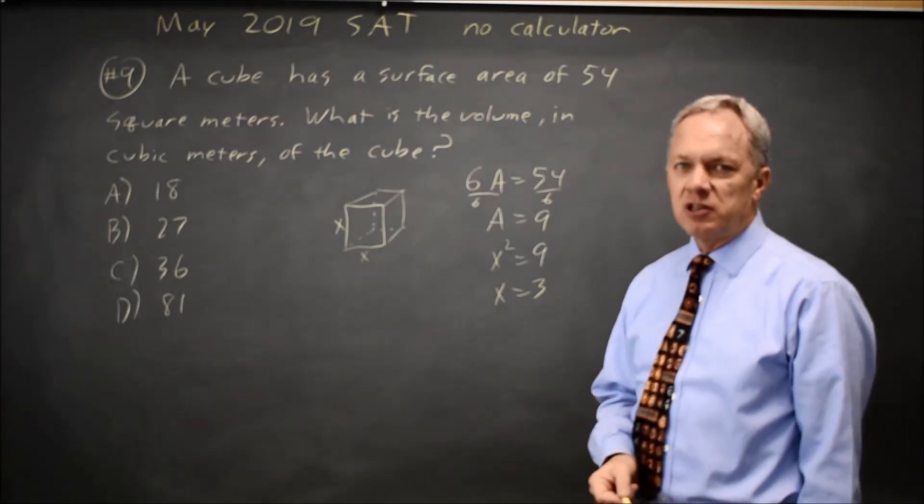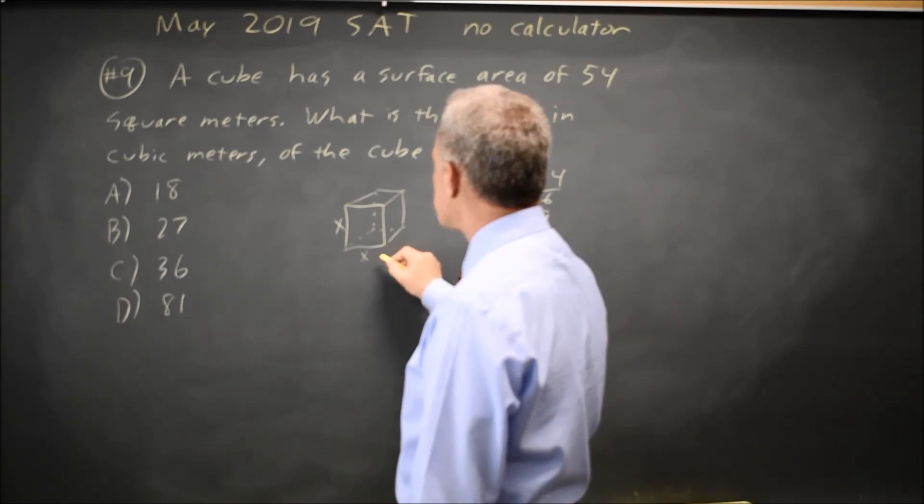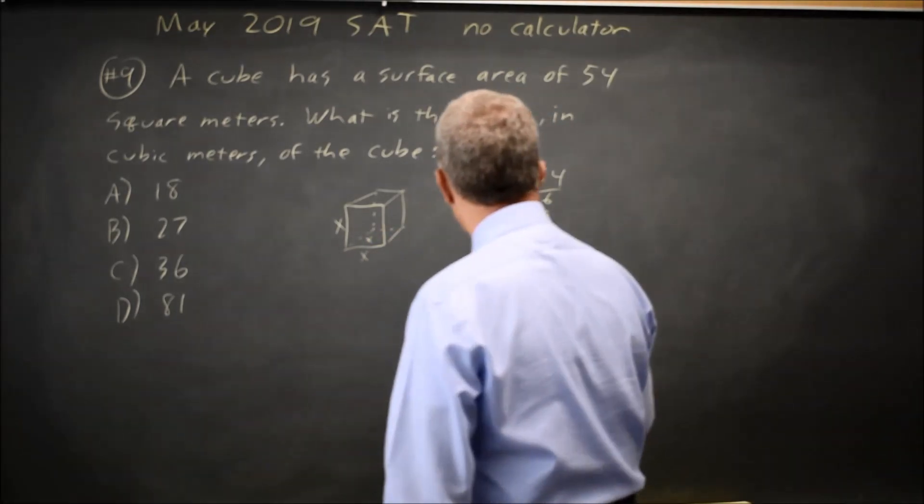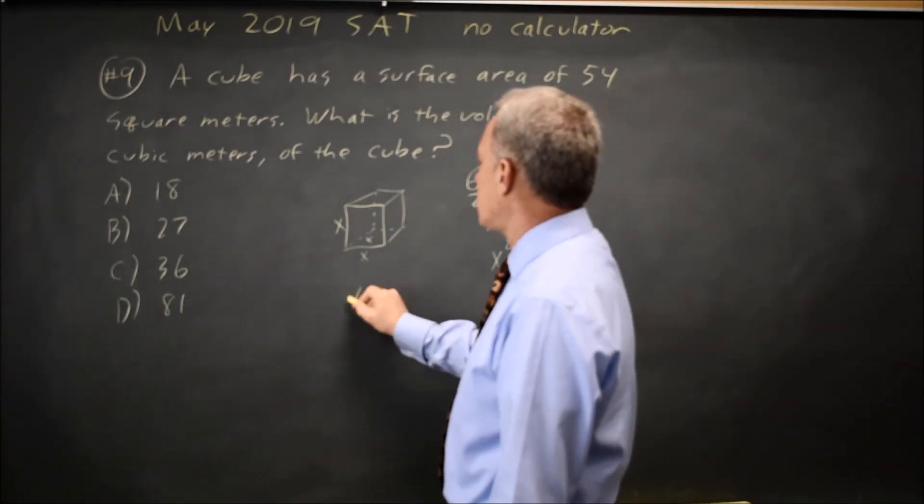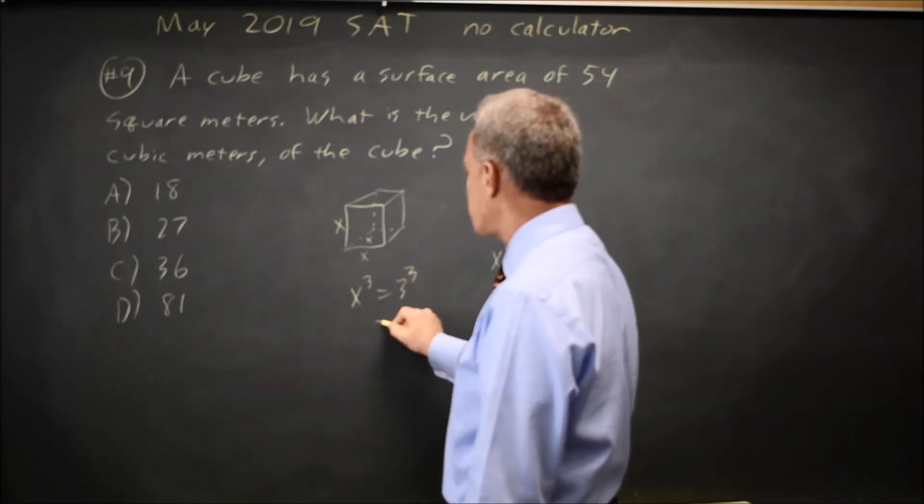The volume of a cube is given at the start of each math section, and it's length times width times height, and all 3 are x. So x cubed equals 3 cubed, which is 3 times 3 times 3.